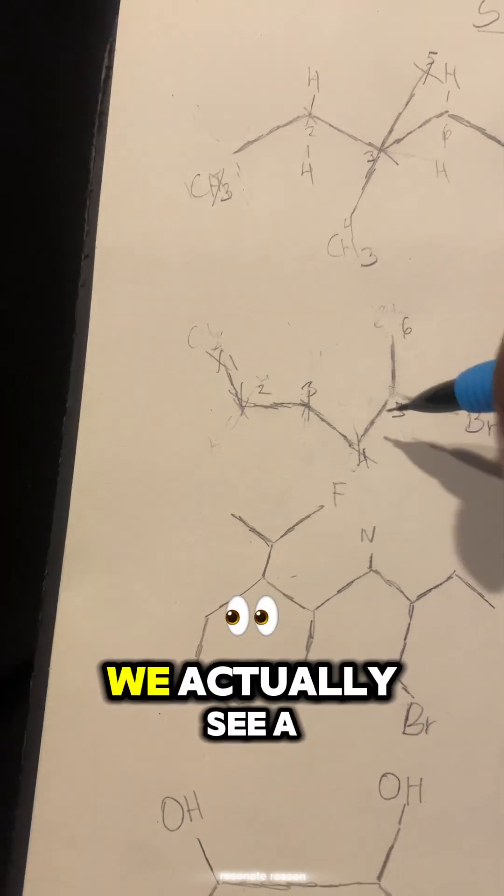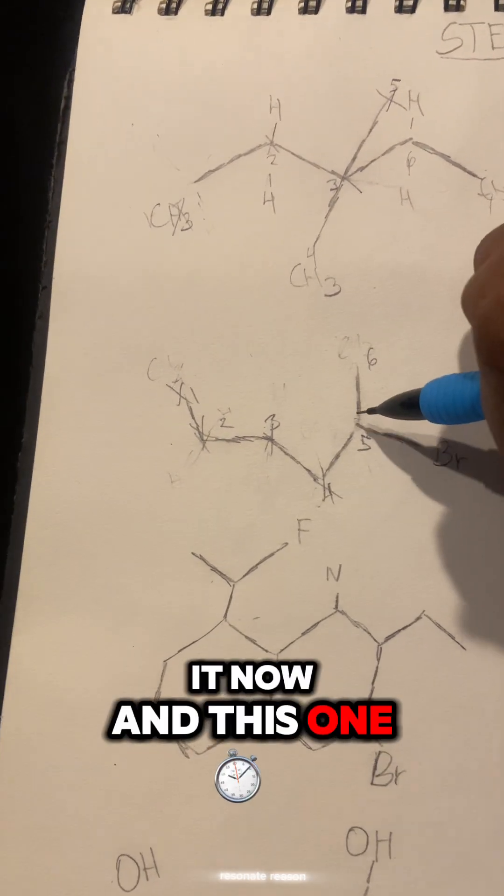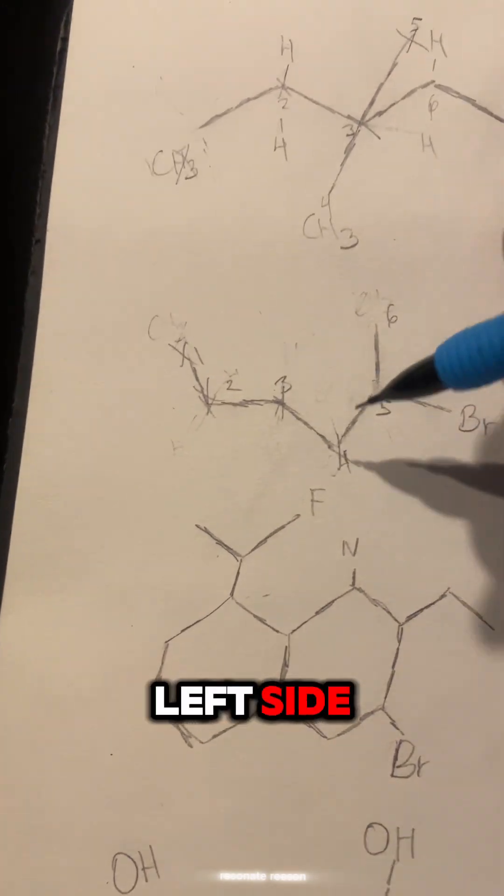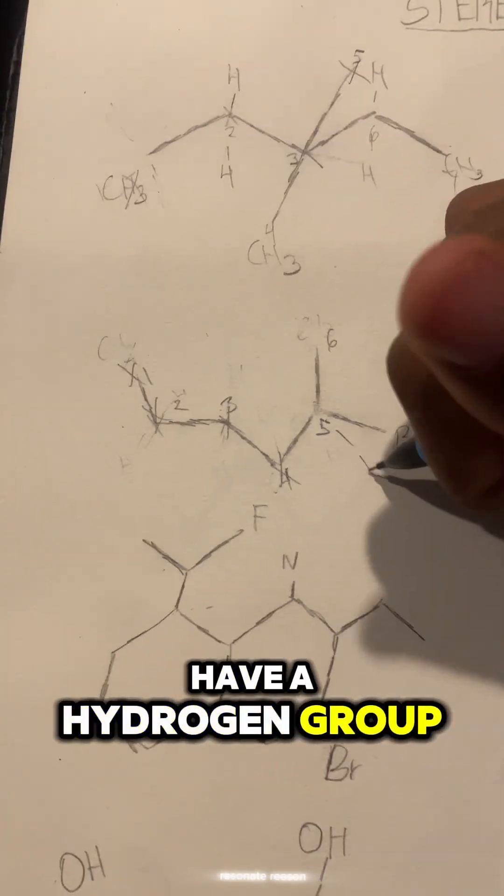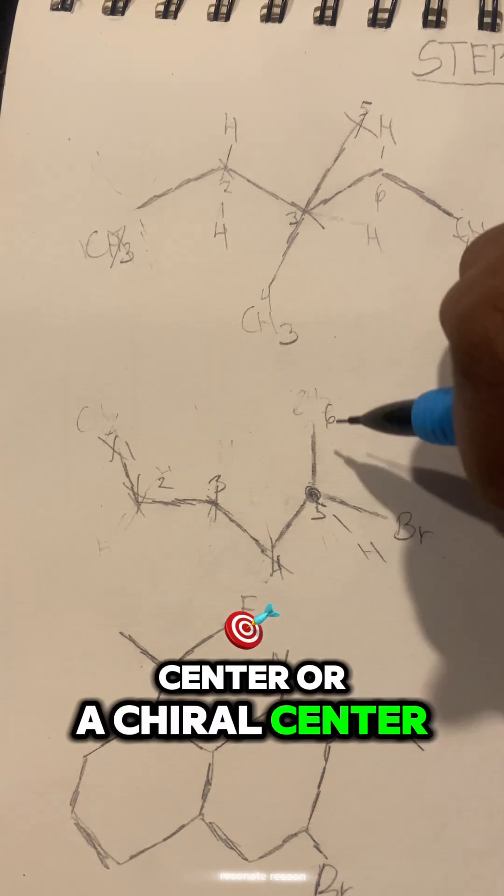Now as we get to the fifth one, we actually see a bit of a difference. This one has a bromine group attached to it. So it has a bromine group attached to it, it has a methyl at the top, and it has a butyl group on the left side. So because, oh yeah, it's going to have a hydrogen group also. So because it has four different groups, this is a chiral center.